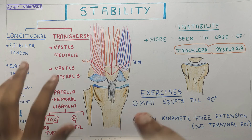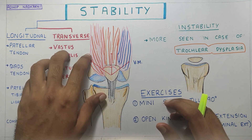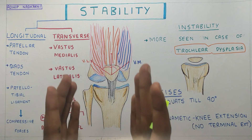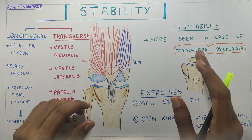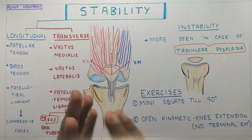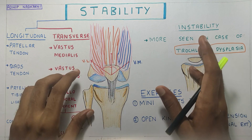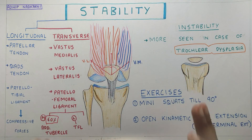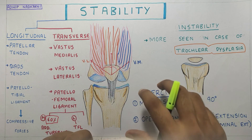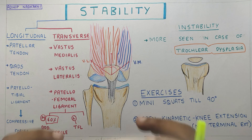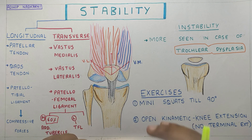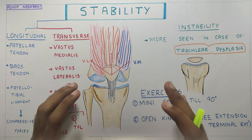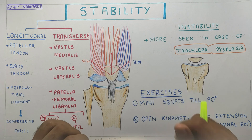To summarize: we talked about the longitudinal and transverse structures that provide stability to the knee joint, then went over the Q angle and the factors that affect it, and finally discussed exercises for a person with patellofemoral instability — ensuring we don't increase stress at the patellofemoral joint.